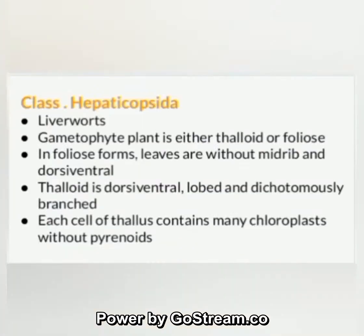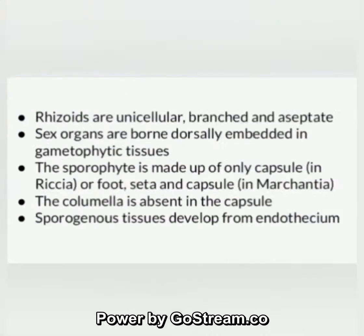Class Hepaticopsida — liverworts: the gametophyte plant is either thallose or foliose. In foliose forms, leaves are without midrib and are dorsiventral. Thallose forms are dorsiventral, lobed, and dichotomously branched. Each cell of the thallus contains many chloroplasts without pyrenoids. Rhizoids are unicellular, branched, and aseptate.